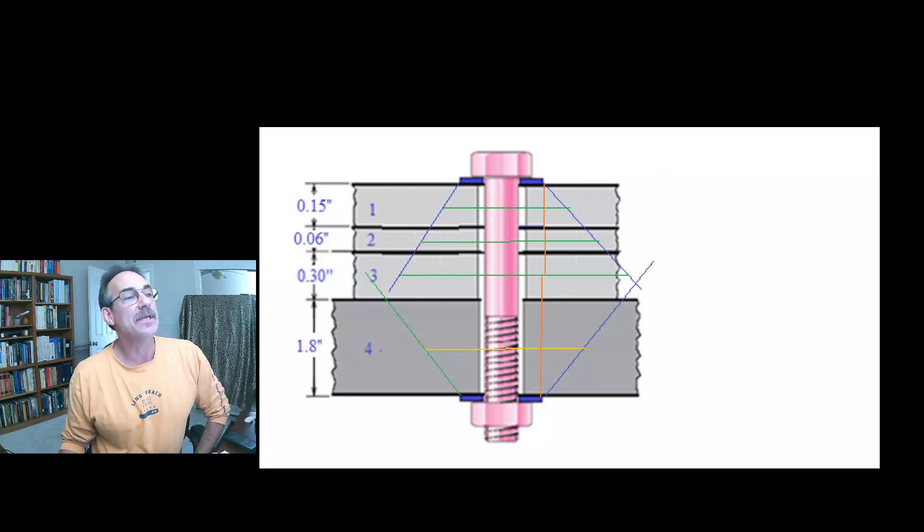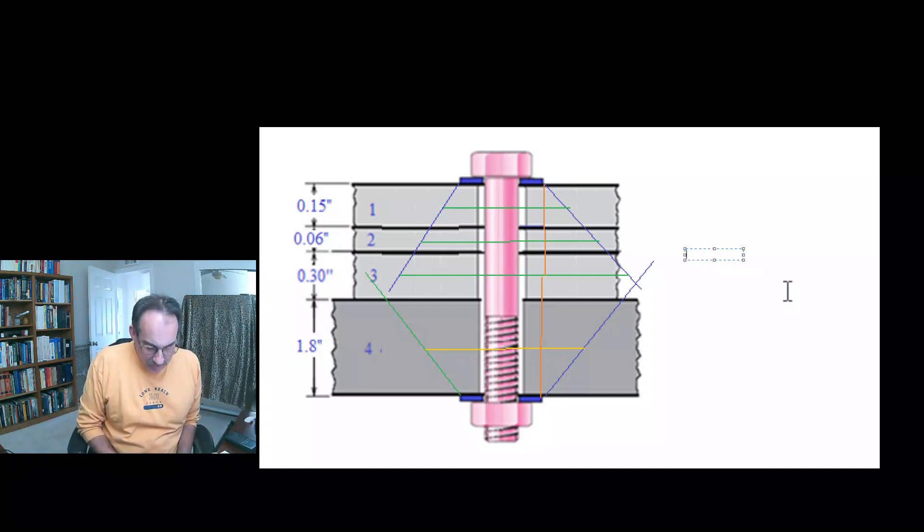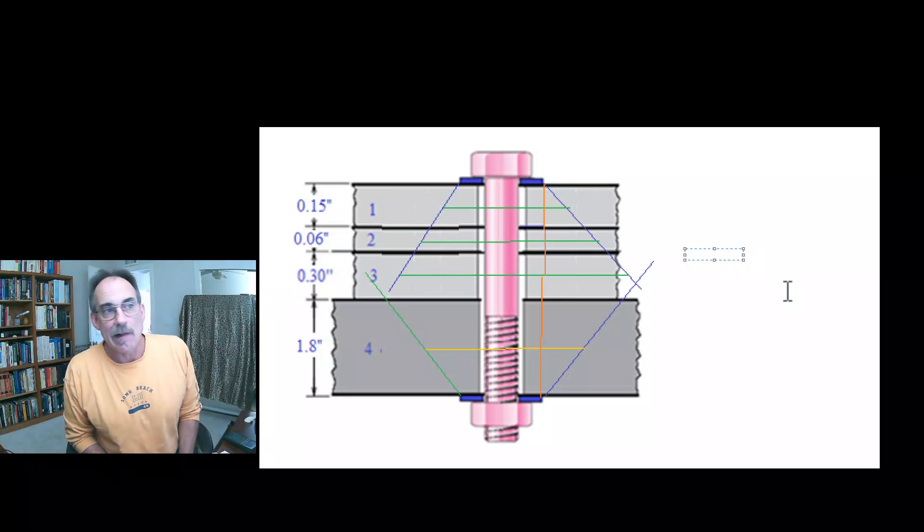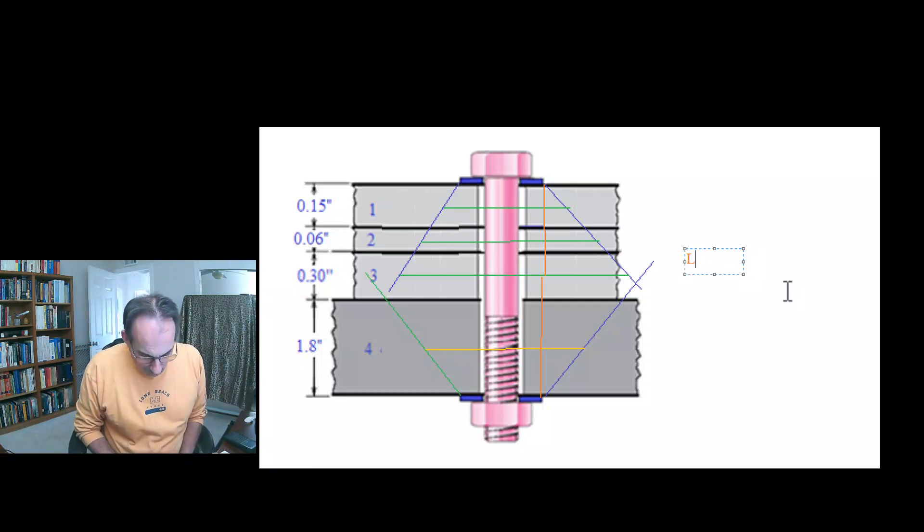If we just calculate that, we see that first one is going to be, let's go ahead and we'll call the depth L. So that L parameter coming from the upper cone angle is just going to be the thickness of our first plate plus the thickness of our second plate.